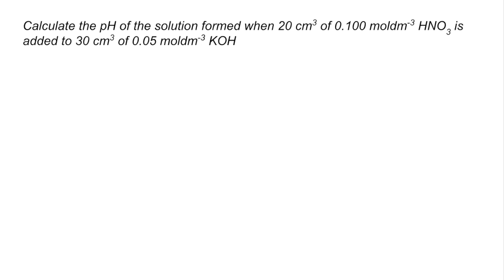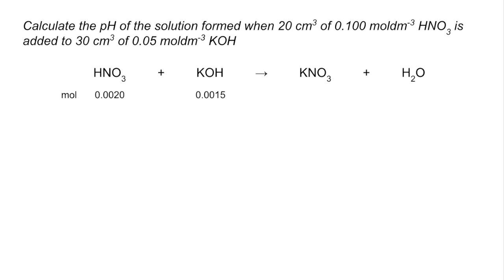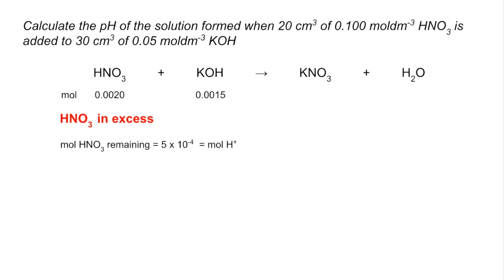The final calculation involves a combination of a strong acid and a strong alkali — we need to find the pH of the solution left over. Starting with the equation, we work out the moles of both acid and alkali using concentration times volume. The HNO3 is in excess, so the moles of H+ remaining is the difference: 5 × 10⁻⁴ moles. Because it's monobasic, that equals the moles of H+ as well.